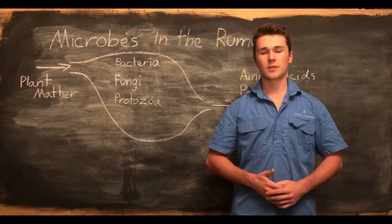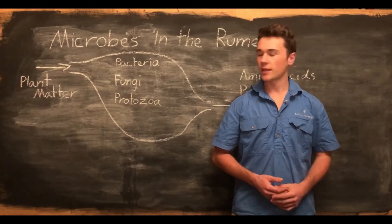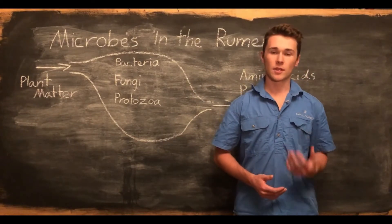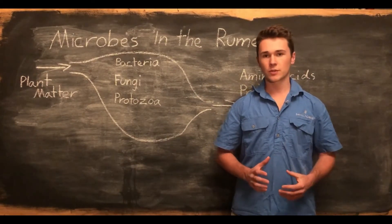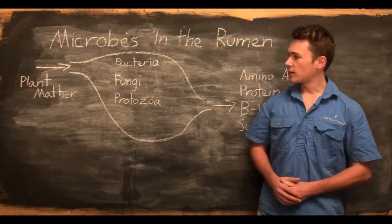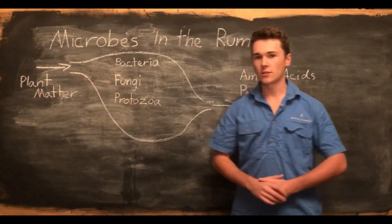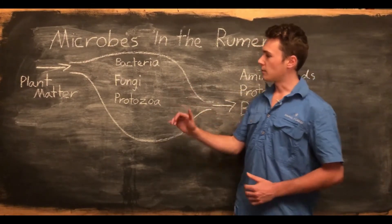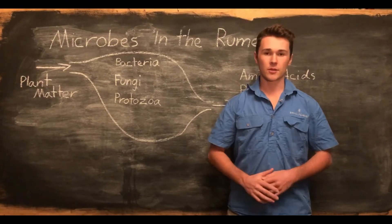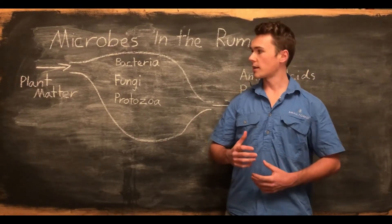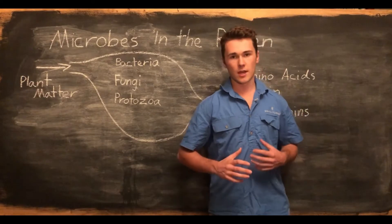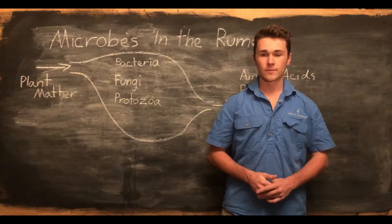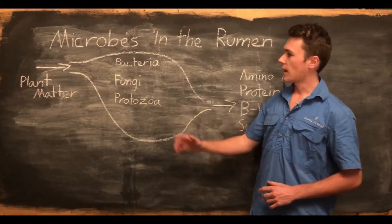The function of these microbes is to break down carbohydrates found in plant matter. These carbohydrates include cellulose, which is quite hard to break down, as well as simple sugars and starch. The plant matter moves into the rumen as the animal eats, and then these microbes start to decompose and break it down. The animal can't break down these compounds by themselves, which is why they recruit microbes to do this work for them.